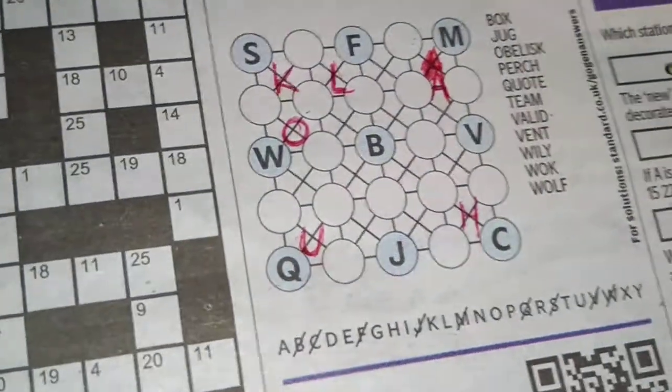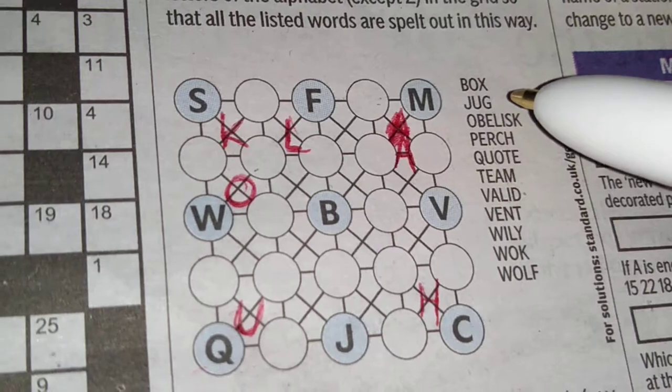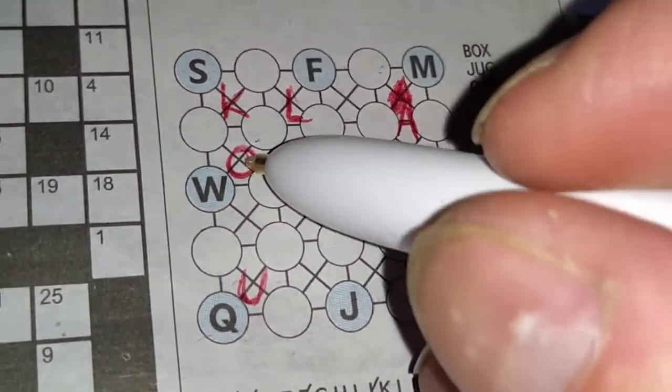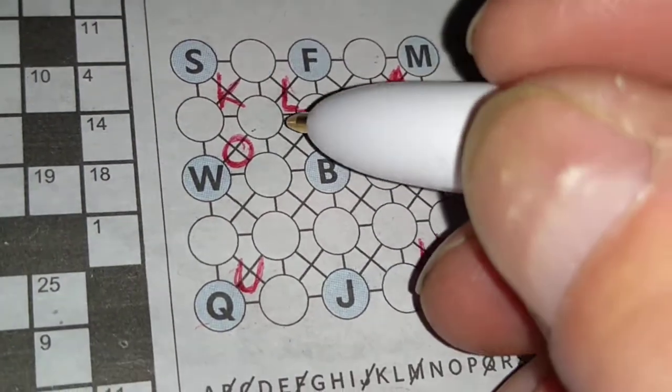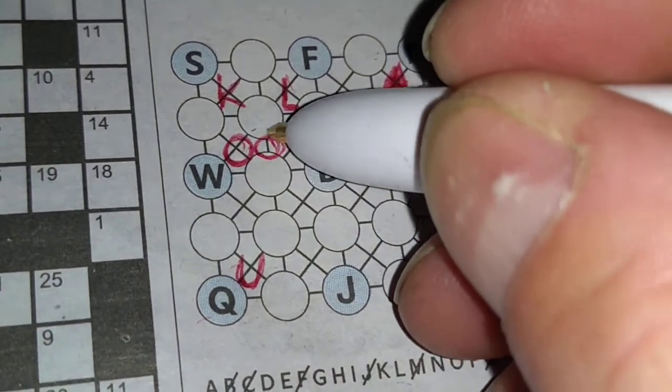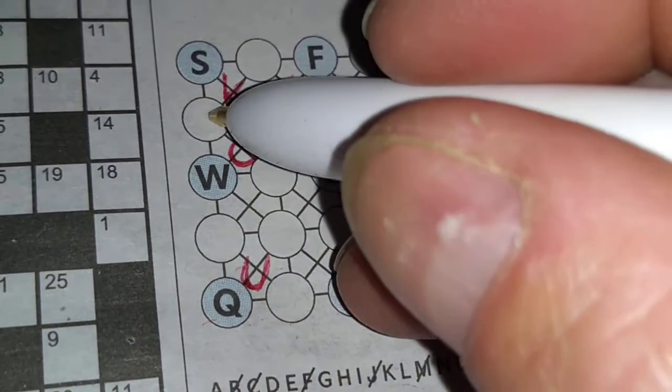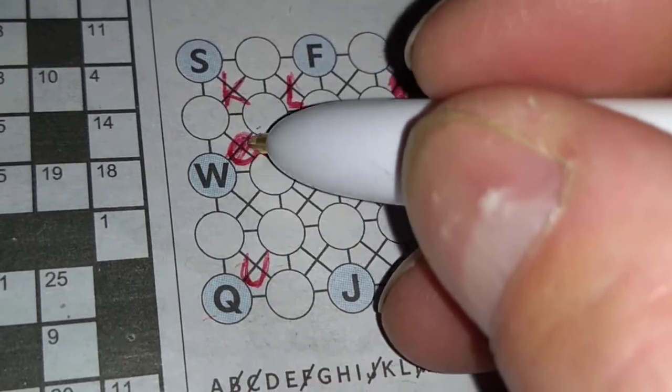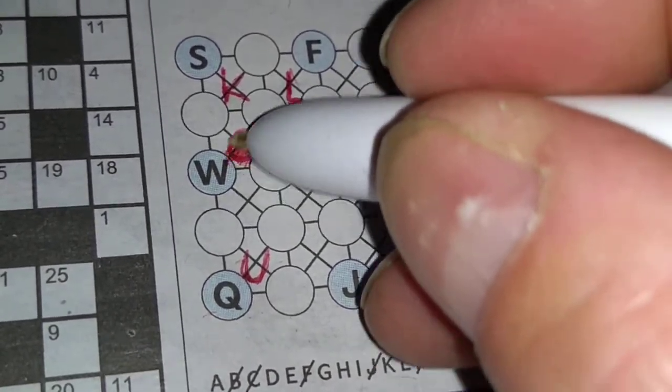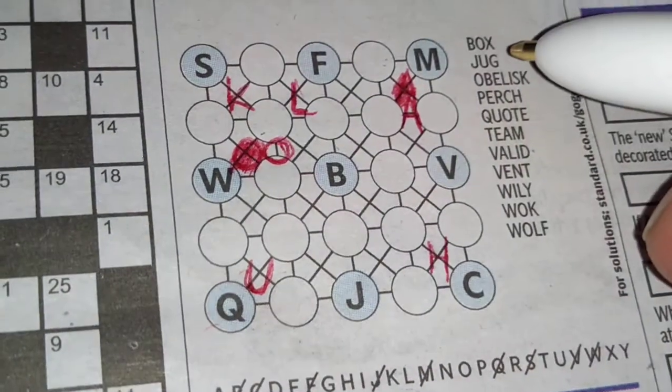And now we can start to go around again. So, starting with box. Well look, here's the O here. That O is going to have to be one of these two now. Because it can't connect to the B if it's over there. So we've only got two that that can be. So that's box.